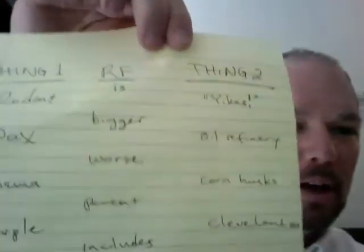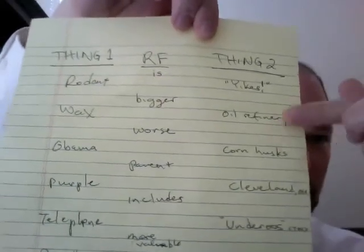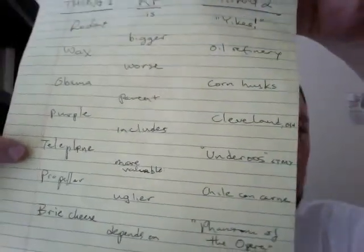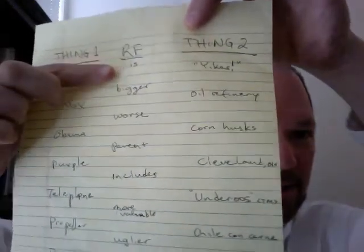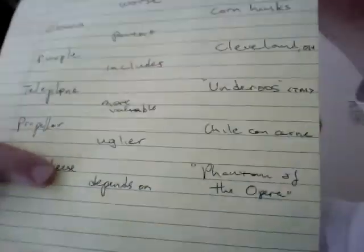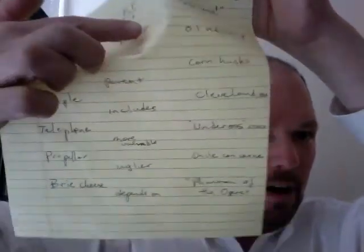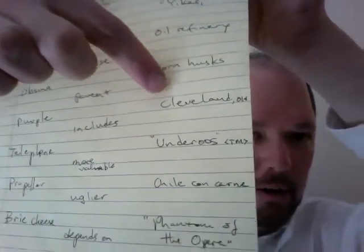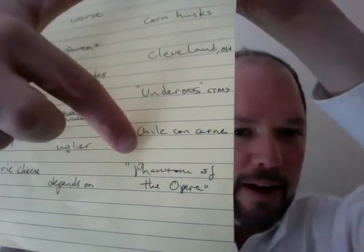We could take any one of these randomly selected nouns — rodent, wax, Obama, people, telephone, propeller, breeches — and any one of these relational frames — is bigger than, is worse than, is the parent of, includes, is more valuable than, is uglier than, depends on — and combine them with a second randomly selected noun: yikes, oil refinery, corn husks, Cleveland Ohio, trademark, chili con carne, or the Phantom of the Opera. We would be able to find a story such that any of those randomly selected things has that relationship to the other thing. That's the arbitrary applicability of relational framing.